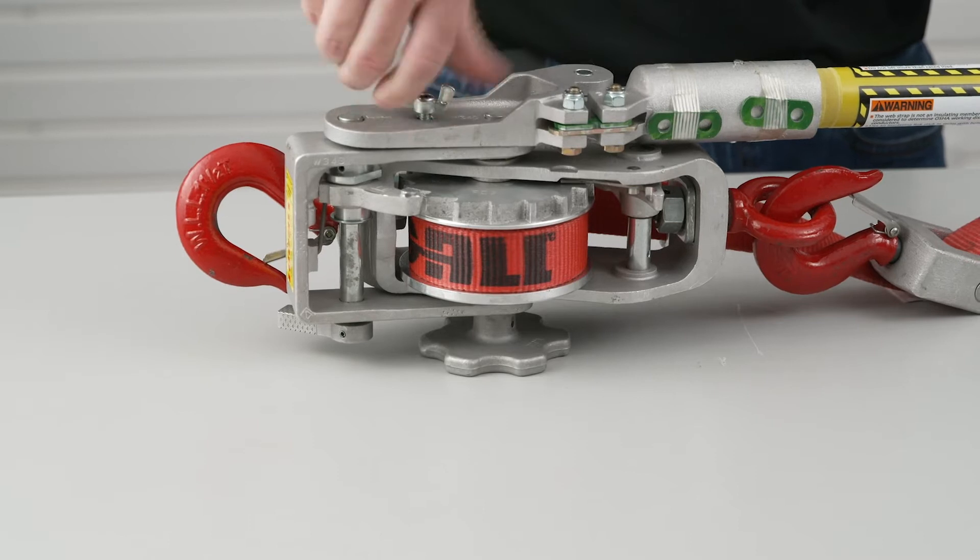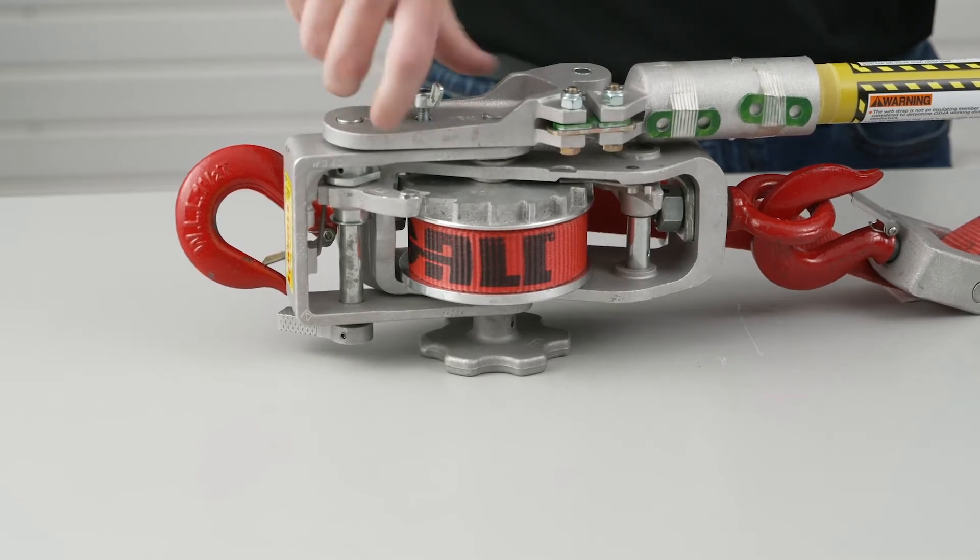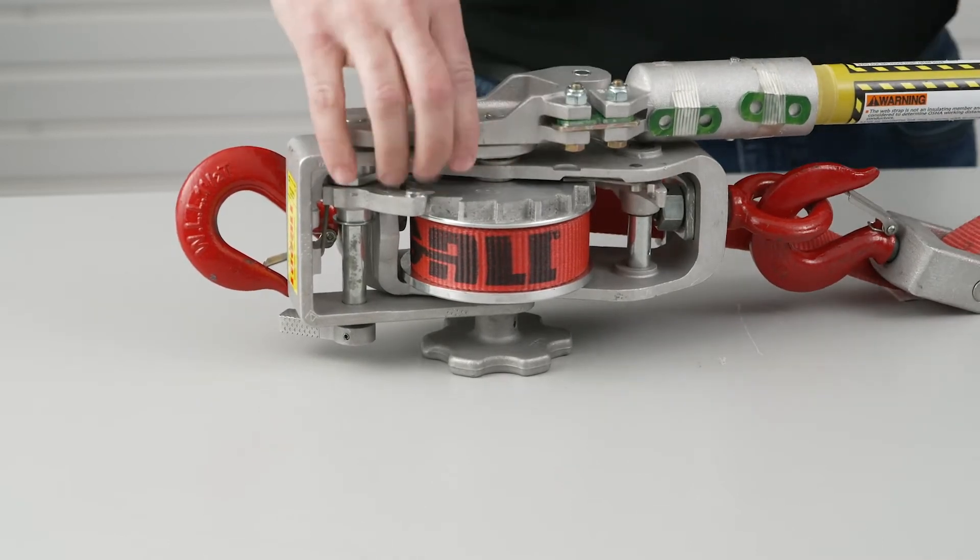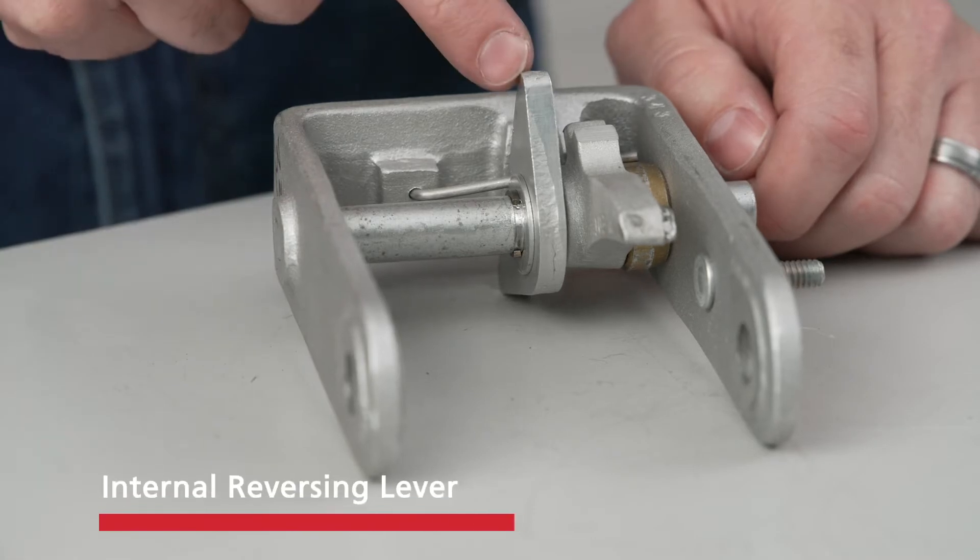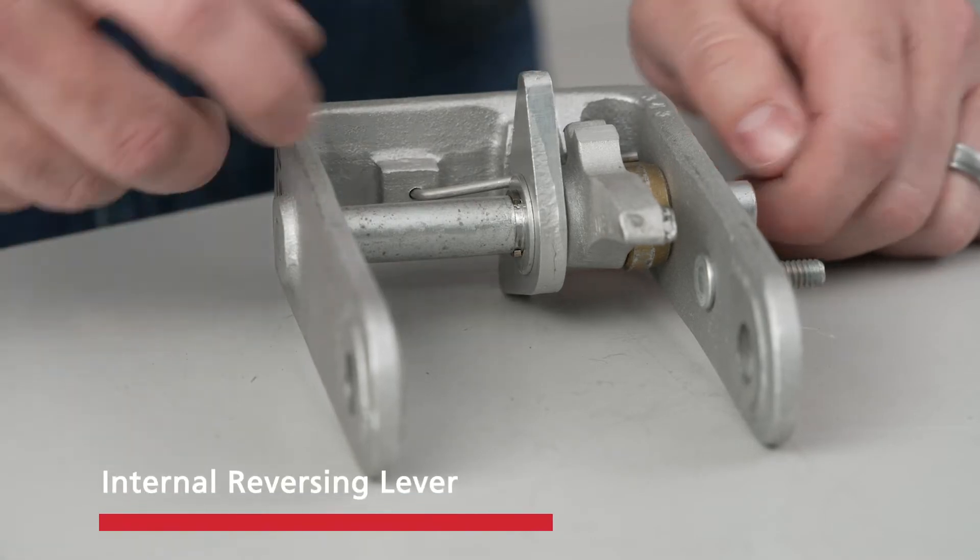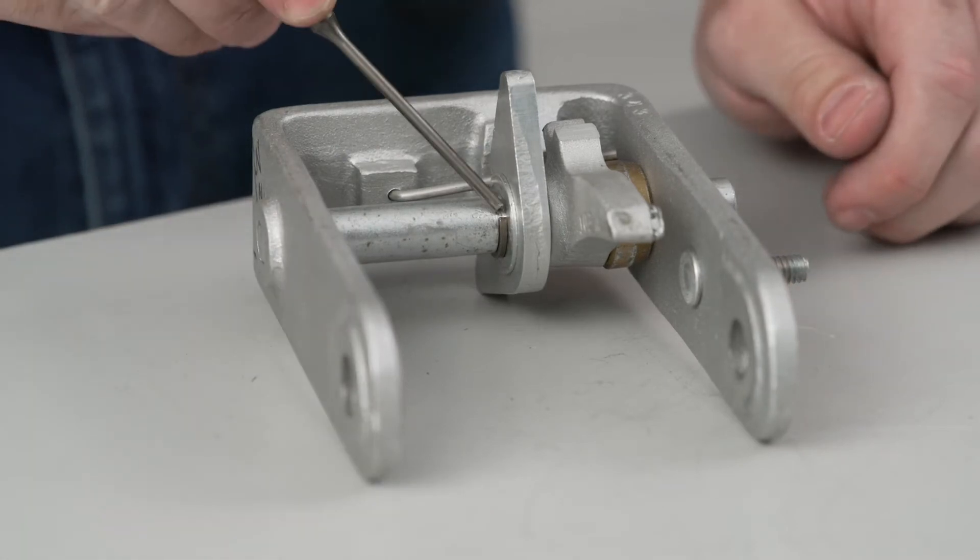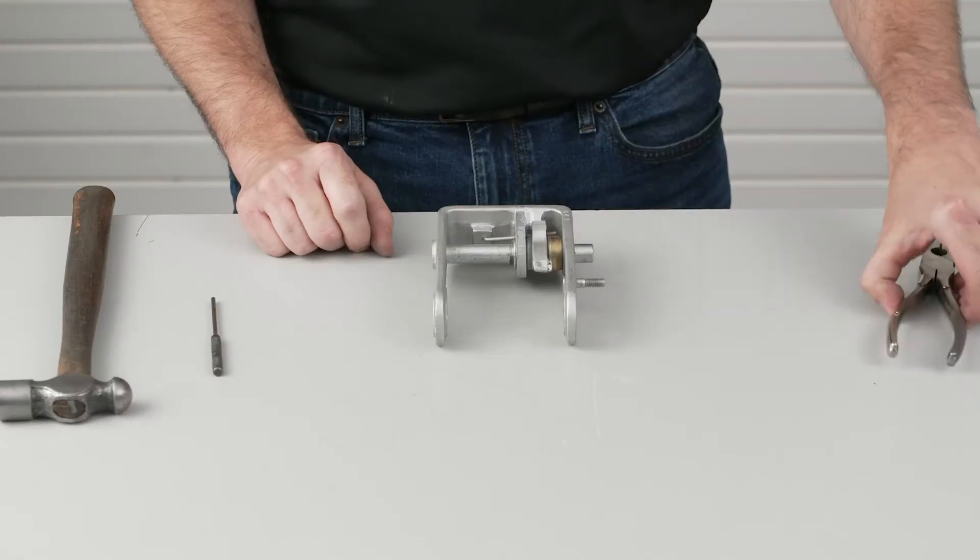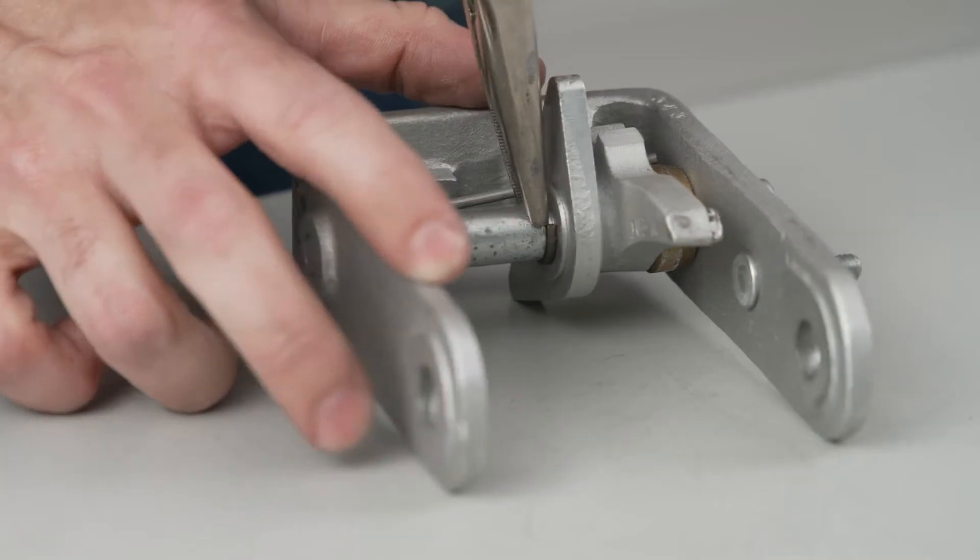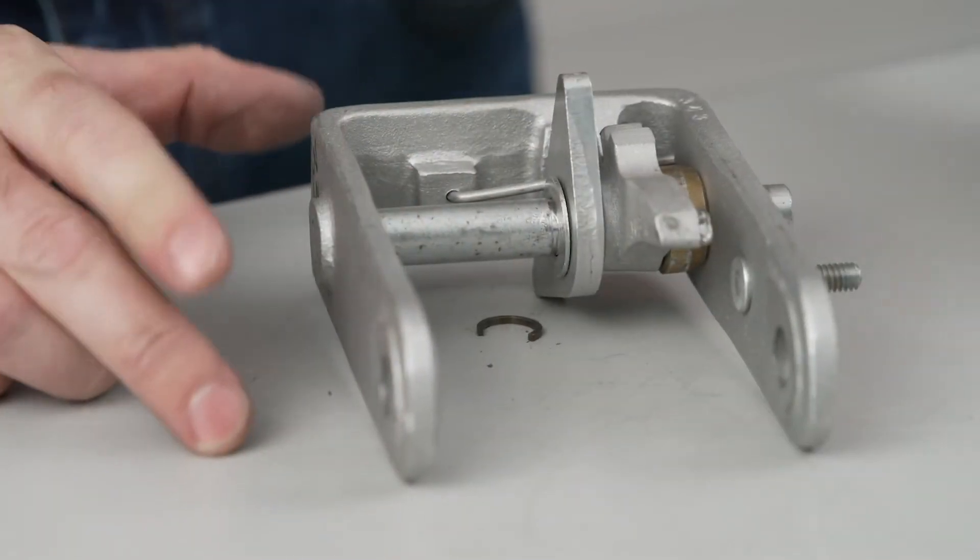First, remove the hoist handle. If your Lug-All Winch Hoist has an internal reversing lever, rotate the U-Frame Pawl Shaft so that both ends of the C-Clip are facing upward. Use the needle-nose pliers to remove the C-Clip from the U-Frame Pawl Shaft.